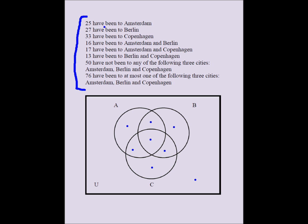For instance, 25 have been to Amsterdam — that means 25 is the sum of those four regions in the Amsterdam circle. 27 have been to Berlin — that means 27 should be the sum of those four regions in the Berlin circle. 33 have been to Copenhagen — 33 should be the sum of those four regions in the Copenhagen circle.